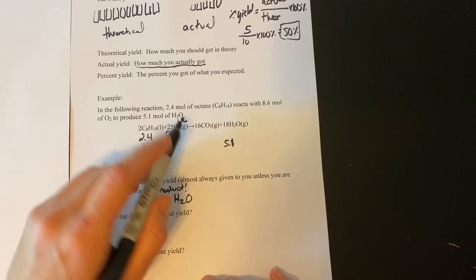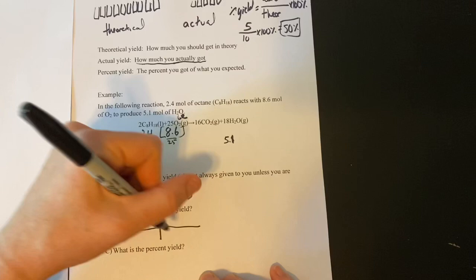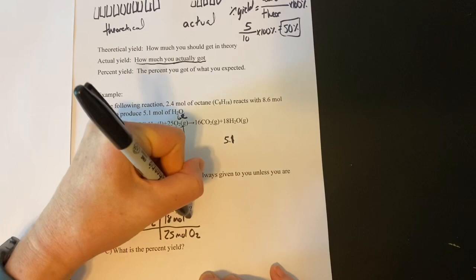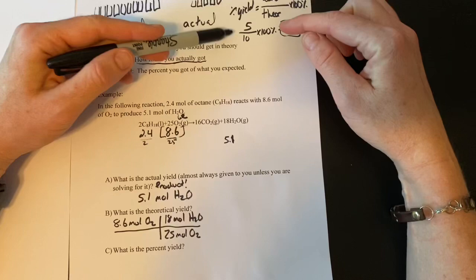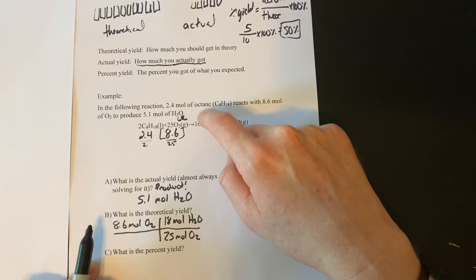Remember, we don't start with the limiting amount. We start with the amount given to you in the problem, that 8.6. So, we start with 8.6 mole of O2. We know that for every 25 mole of O2, we get 18 mole of water. Why did I choose water? Well, I'm trying to find the theoretical yield of something that I can compare it to. Here, we had fries and fries. So, here, my actual yield was 5.1 mole of water. So, when I'm looking for my theoretical yield, I'm also going to use water.